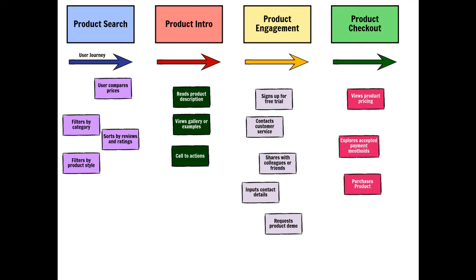Looking at the template shown here, it gives an idea of what a storyboard looks like — having a product search, product intro, product engagement, and product checkout, where the journey moves through user stories with a control flow showing how things move from one module to another. This helps you understand what the control flow will be and what further derivations are required.